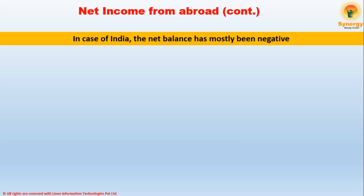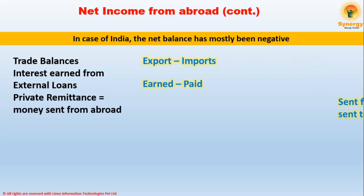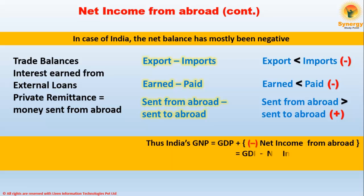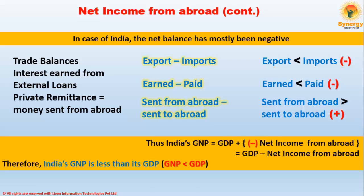When studying net income from abroad, especially for India, we observe that the net balance has mostly been negative. Under trade balances, our imports are larger than exports. Under interest on external loans, our interest paid has been larger than interest earned, meaning India has been a net borrower. It is only under private remittances — money transferred by citizens to the home country — that we see a positive figure. Adding all components, India's net income from abroad is negative, and therefore India's GNP is less than its GDP.